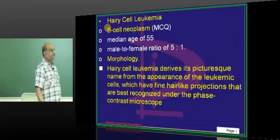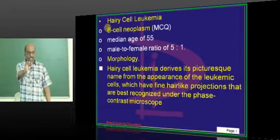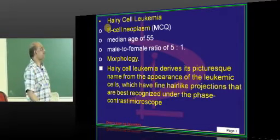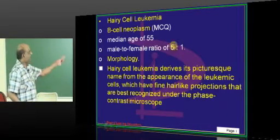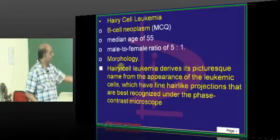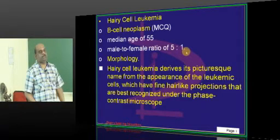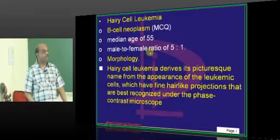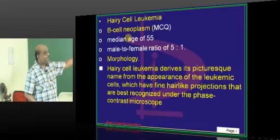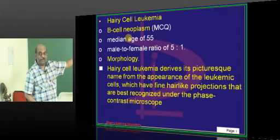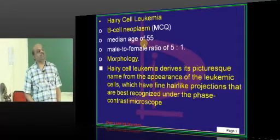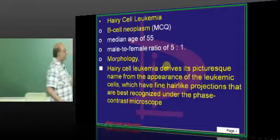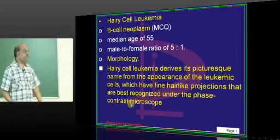Hairy cell leukemia is very easy. It is a B cell neoplasm. The median age is 55. After becoming a professor, you will get hairy cell leukemia — no hurry. Male to female ratio is 5:1. You can remember: after you lose hair as a man after andropause, you get hairy cell leukemia. So males are more affected, and the median age is 55.